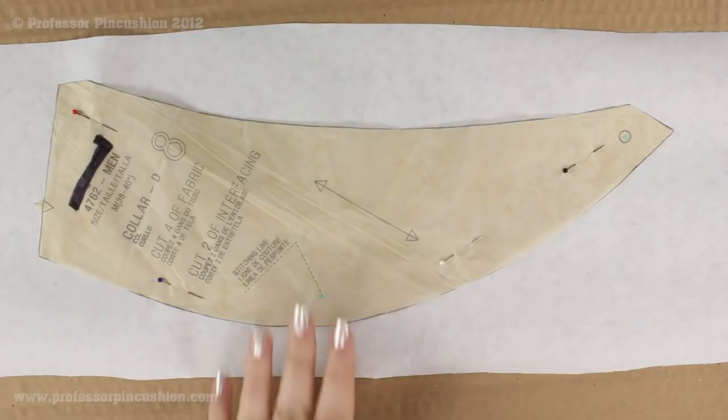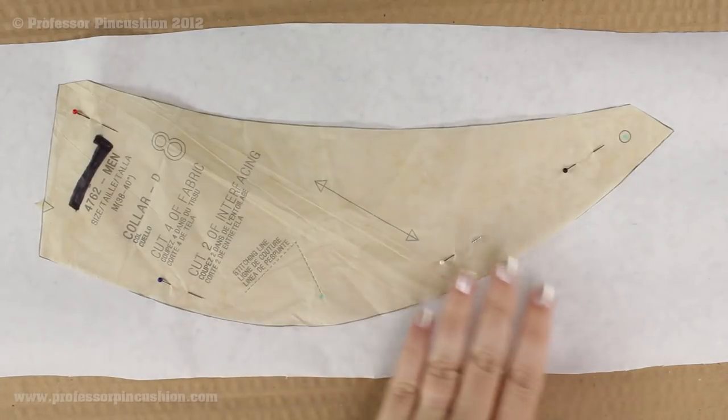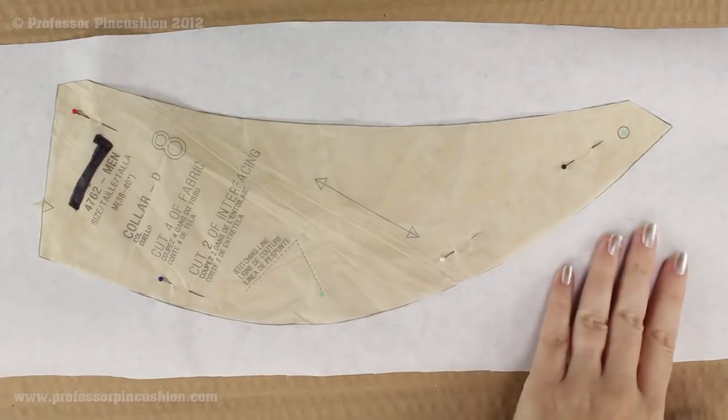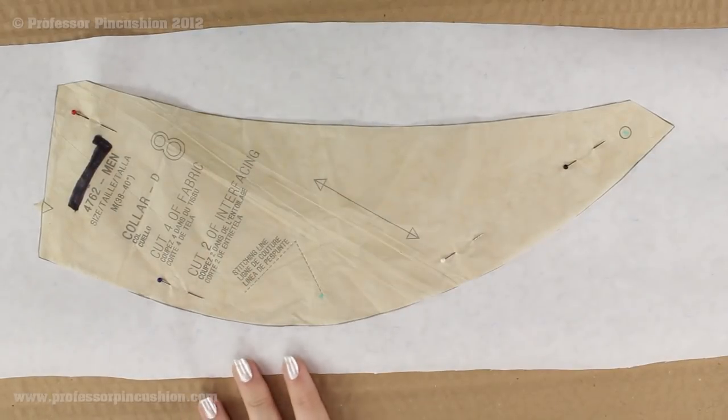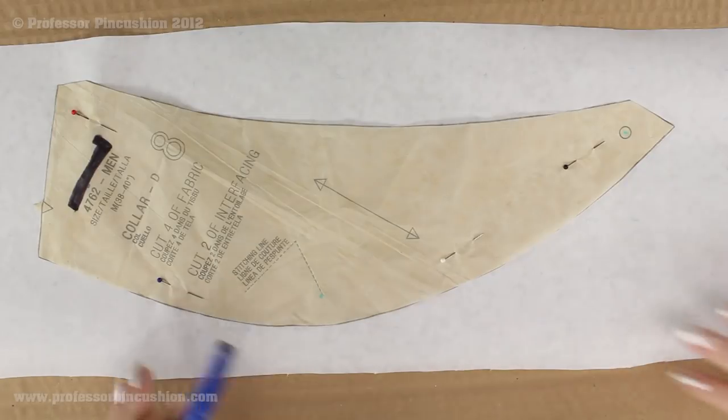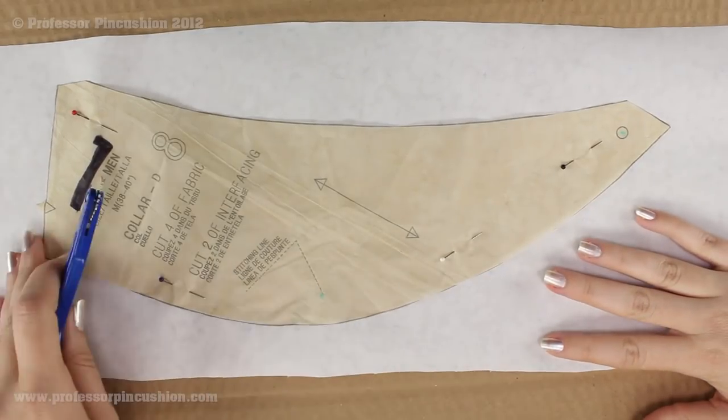So to do that I'm going to take my pattern piece and I just lightly pinned it to another sheet of paper so it's not shifting around. And I placed it on a piece of cardboard. It works really well on cardboard. If you do it on a flat surface this method doesn't work very well.